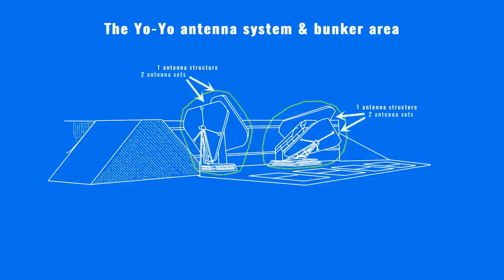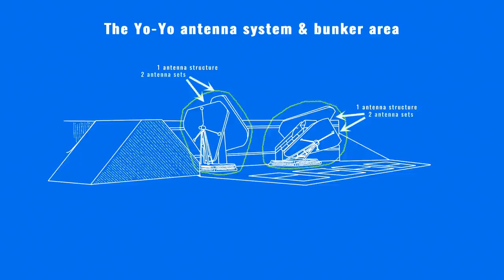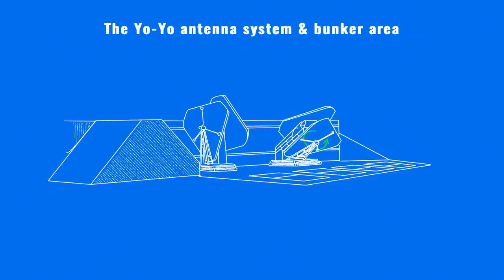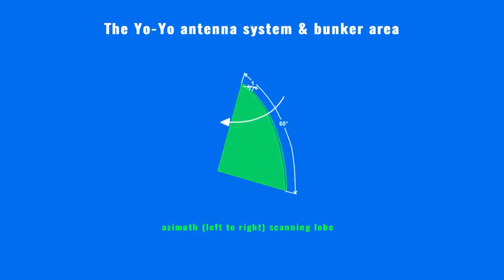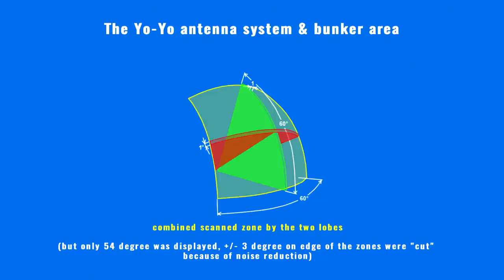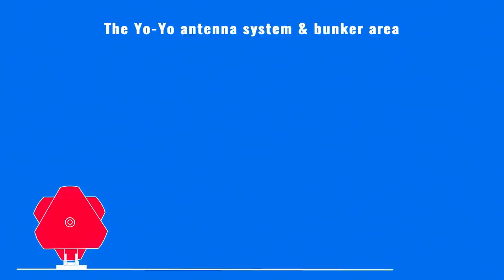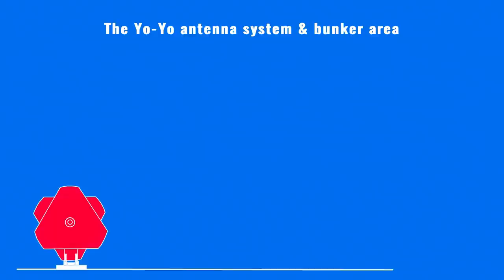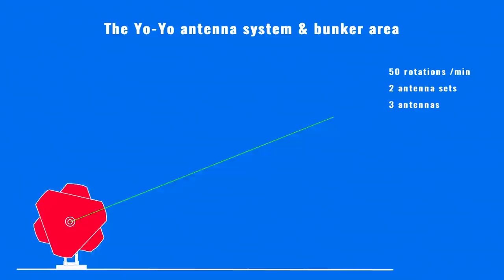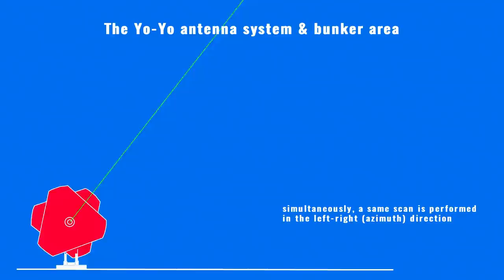The Yo-Yo antenna system consisted of two antenna structures, each with two antenna sets. Each rotating antenna set had three antennas positioned at a 120-degree circular offset. One antenna structure with its two antenna sets scanned in azimuth, meaning left to right; the other scanned in elevation, meaning down to up. Each antenna or emitter produced a 1-degree by 60-degree slope. The rotation of the antenna sets created a spherical shell scan zone. Rotation speed was 50 rotations per minute, and the combination of rotation speed and antenna design yielded 300 scans per minute in a 60 by 60 degree area, providing the targeting data for missile guidance.